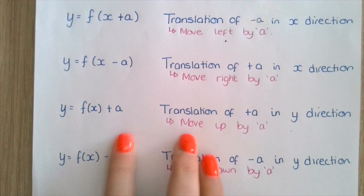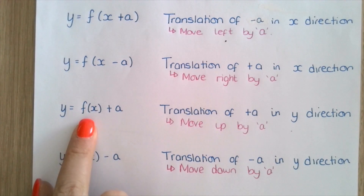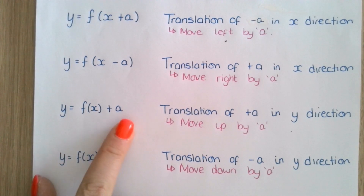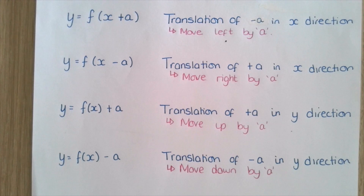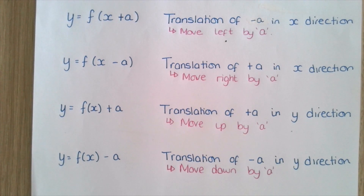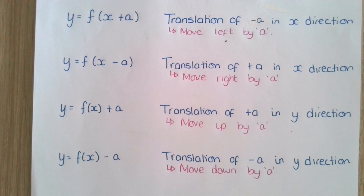The next transformation is y equals f of x plus a, where the plus a is outside of the brackets this time. This is a translation of positive a in the y direction. So the whole graph is going to end up moving up by whatever the value of a is. To find this out, all you need to do is add the value of a to the y coordinates given in your y equals f of x graph.